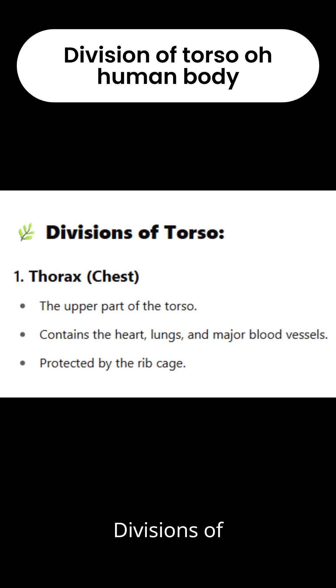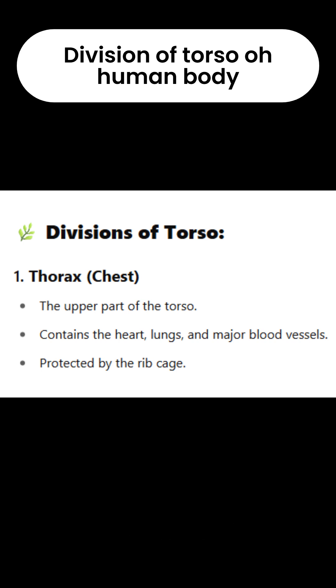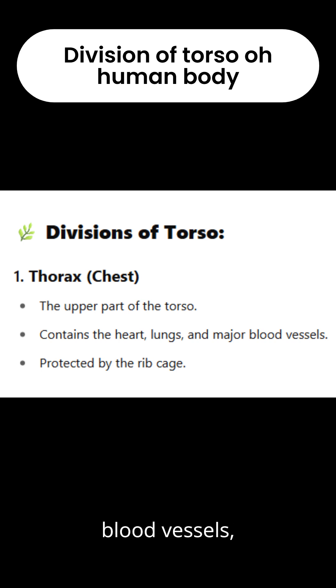Division 1: Thorax (chest). The upper part of the torso contains the heart, lungs, and major blood vessels. Protected by the ribcage.